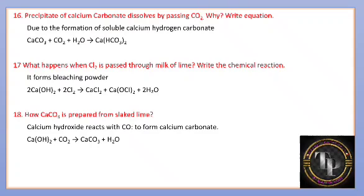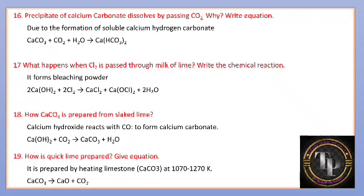How is quick lime prepared? Write the equation. Quick lime means calcium oxide, CaO. Heating calcium carbonate at 1070 to 1270 K produces CaO with elimination of CO2. Quick lime is CaO; slaked lime is Ca(OH)2.